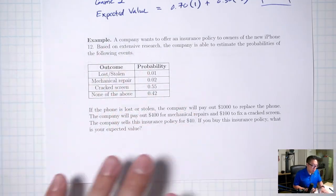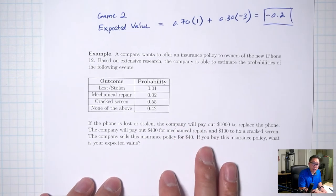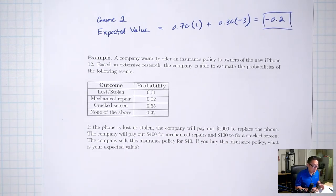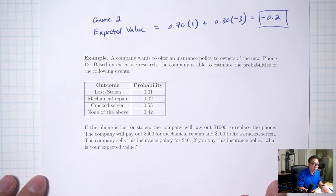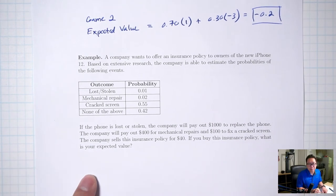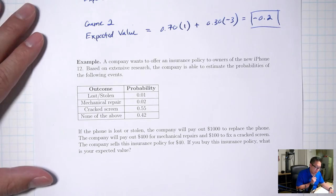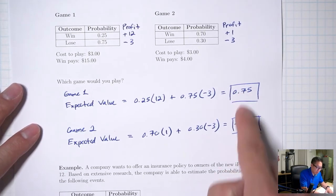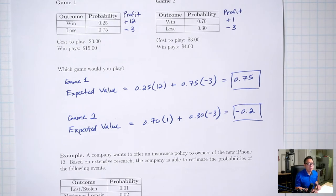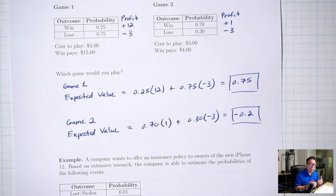We're not going to go through the details of calculating expected value for this example, but in real life the expected value of most insurance policies — actually probably every insurance policy — is going to be negative. That's the only way the company makes money. The expected value numbers come into play if you're playing these games many thousands of times; if you're not, then you would decide differently.